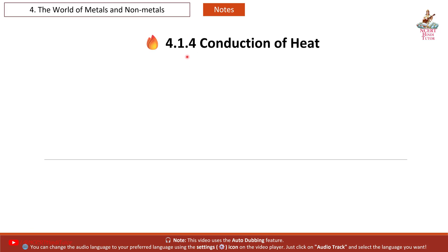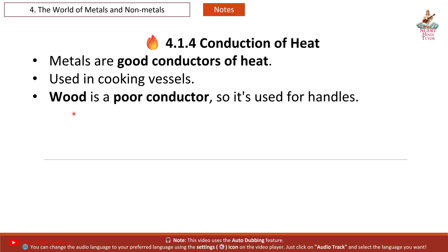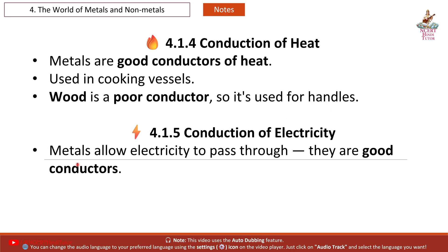4.1.4 Conduction of Heat: Metals are good conductors of heat, which is why they are used in cooking vessels. Wood is a poor conductor, so it is used for handles.